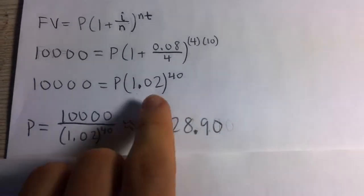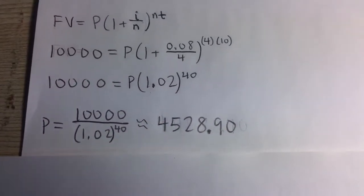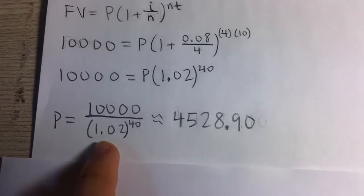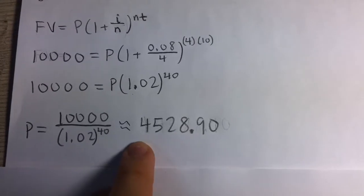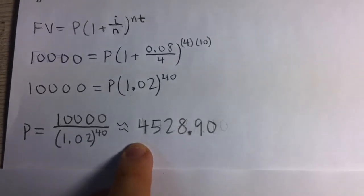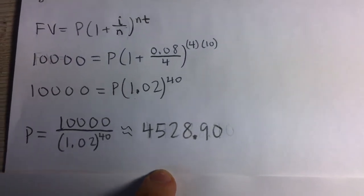So to solve for P, we divide both sides by 1.02 to the 40 power. And so P equals 10,000 over 1.02 to the 40, which is approximately $4,528.90.